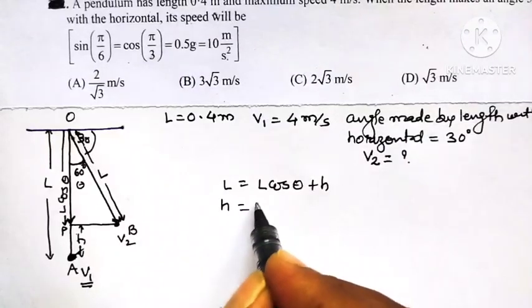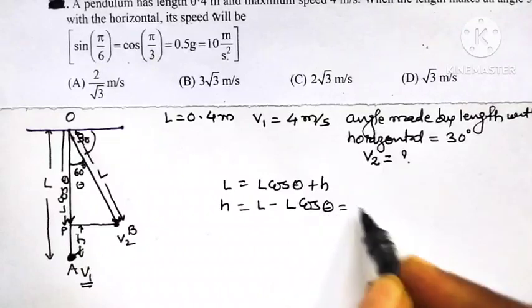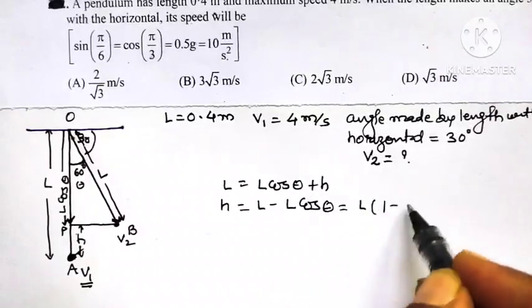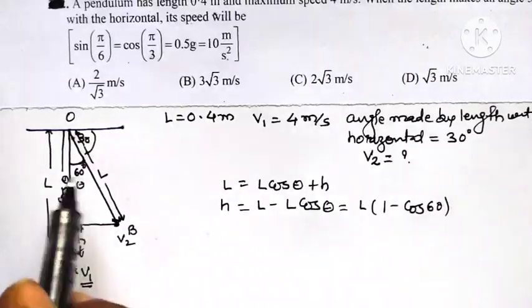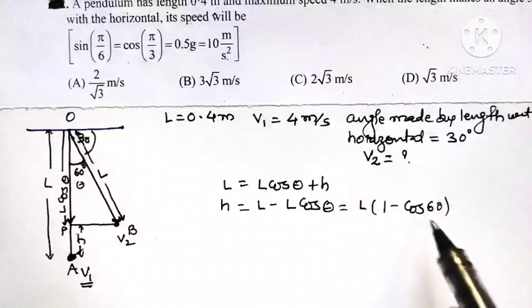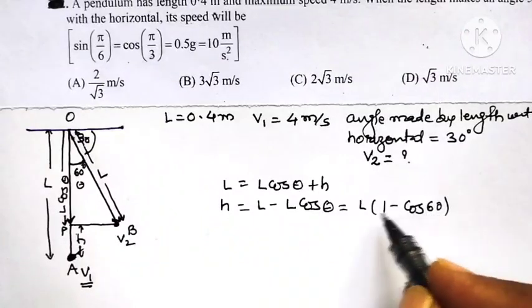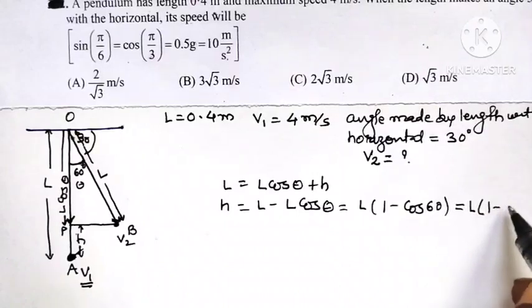H is equal to L minus L cos theta, or it is equal to L times (1 minus cos theta). Theta here is 60 degrees, the angle made by vertical with the length of pendulum. So L in bracket (1 minus cos 60), and cos 60 is sin 30, which means it is 1 by 2.